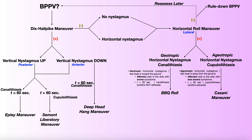In the previous video, we discussed the first diagnostic test for BPPV, which was the Dix-Hallpike maneuver. We're going to switch gears in this video and talk about the second diagnostic test, which is the horizontal roll maneuver.